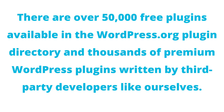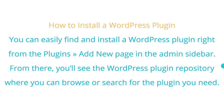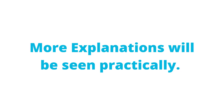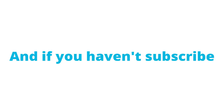To install a WordPress plugin, you can easily find and install one right from the Plugin > Add New page in the admin sidebar. From there you'll see the WordPress plugins repository, where you can browse or search for the plugin you need.